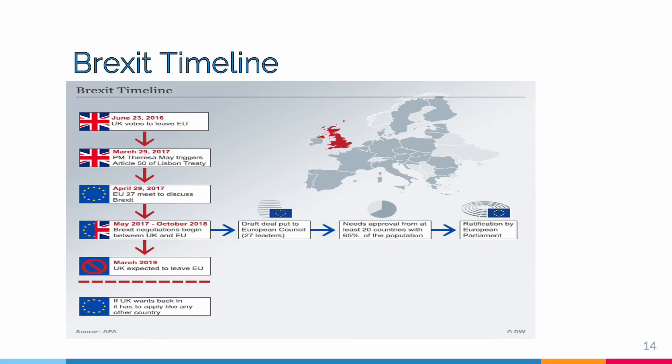To add further context, there is a timeline of Brexit and the events that took place. In 2016, the UK voted to leave the EU, and through to October 2018, Brexit negotiations began between the UK and the EU to draft a deal. Unfortunately, the deal to ratify the UK's relationship with the EU did not proceed as hoped, and the UK was expected to leave in 2019 and officially left the European Union.